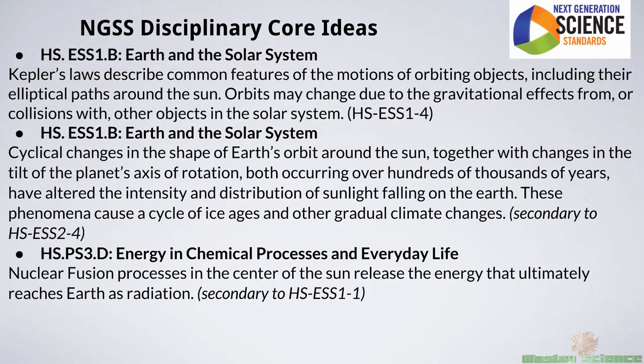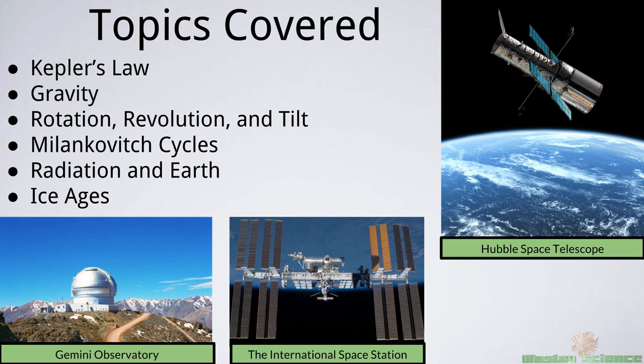In this presentation, I'm going to be covering two of the Earth and solar system DCIs, as well as a physical science standard which is the energy and chemical processes in everyday life. These are the six topics: Kepler's law, gravity, rotation, revolution, and tilt of the Earth, as well as the other planets in our solar system. We're going to be talking about Milankovitch cycles and how the Earth is hit with radiation by the sun in different ways, and we're going to end with ice ages.